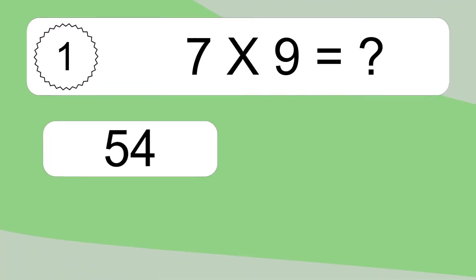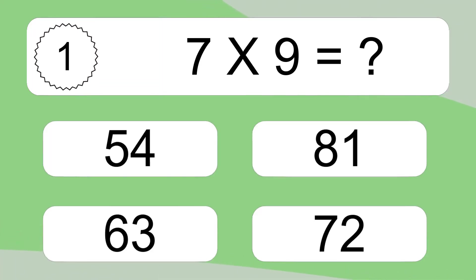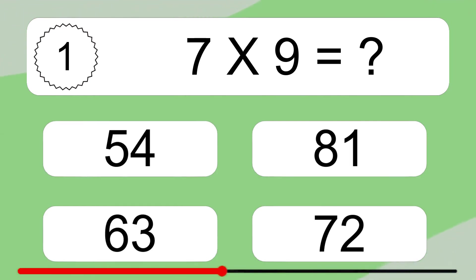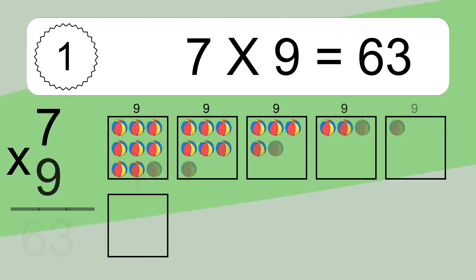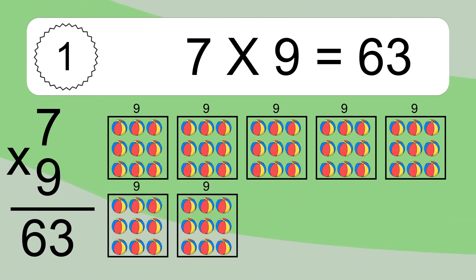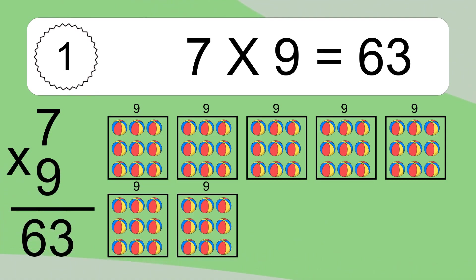Seven times nine equals what? Seven times nine equals 63. We have seven boxes, and each box has nine colorful balls inside. If you count all the balls in all the boxes together, you will have seven times nine balls. This equals 63 balls.